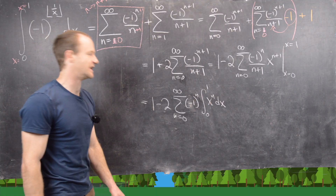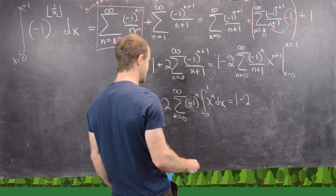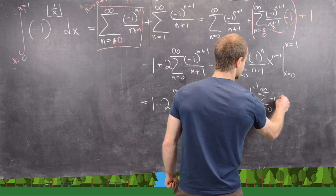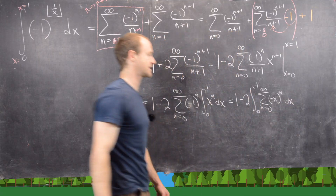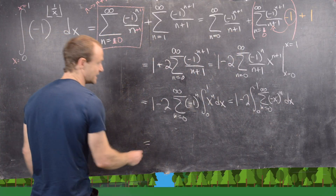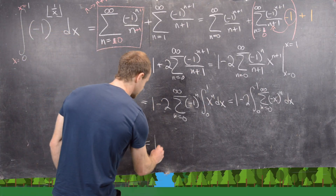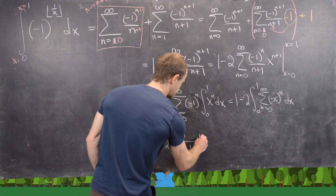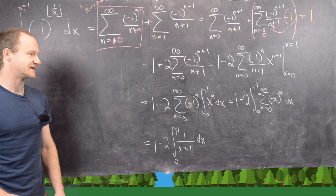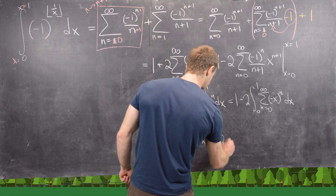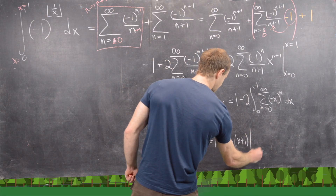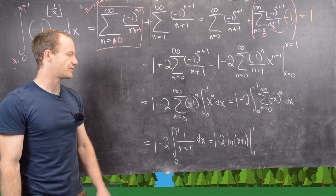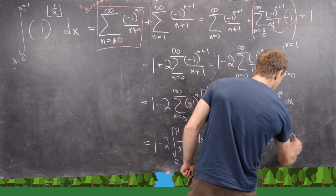We change the order of summation and integration, which is valid because the series is absolutely convergent. This gives 1 minus 2 times the integral from 0 to 1 of the sum from n = 0 to infinity of (−x)^n dx. That sum is a geometric series with common ratio −x, so it equals 1/(1+x). Taking the antiderivative gives 1 minus 2·ln(x+1), evaluated from 0 to 1. Plugging in 0 gives ln(1) = 0, and plugging in 1 gives ln(2). The final answer is 1 minus 2·ln(2).